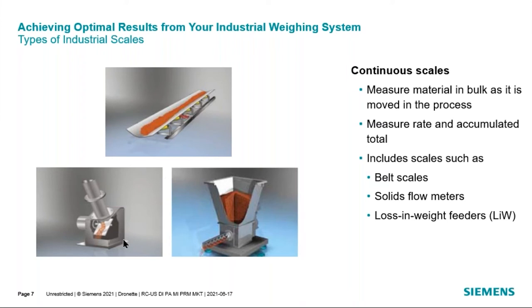Solids flow meters are also considered continuous scales. The most common type is an impact flow meter. Material gravity-feeds through a pipe — typically powders or granule-sized materials — and strikes a sensing plate. The force of impact is measured and used to calculate how many tons per hour or pounds per hour are going through the flow meter at that moment. You would also accumulate a total on that.